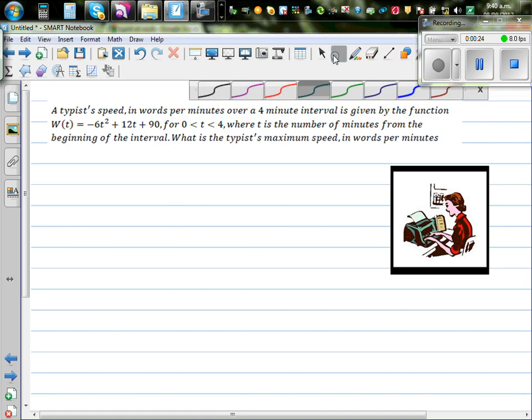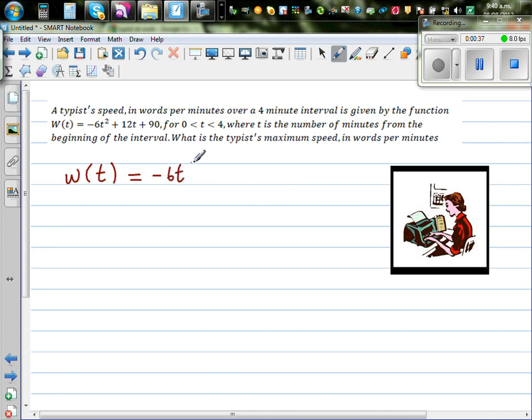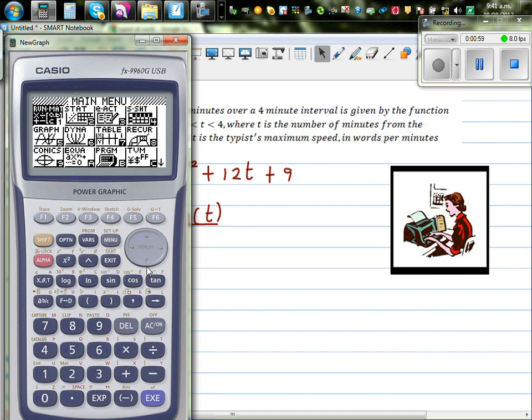First let us understand this graphically and then we'll use calculus later. So the function W(t) or words per minute is a function of time: -6t² + 12t + 90. Let us make up a table. This is t and this is words as a function of time.